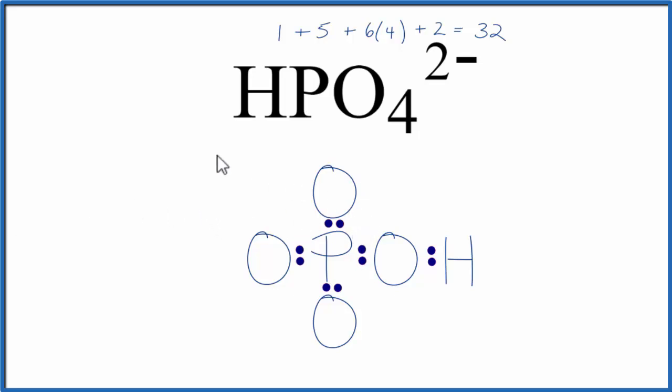Now let's complete the octets on the oxygen atoms. So we've used all 32 valence electrons and everything has an octet. The hydrogen has two valence electrons so it's good as well. This seems like a pretty good Lewis structure.